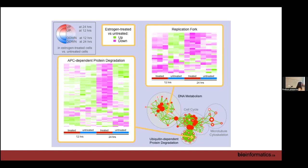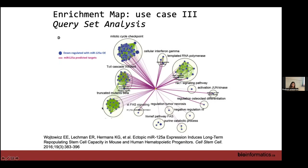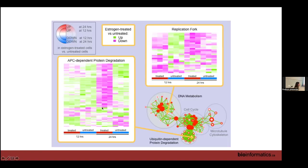You can also delve into the details of an individual pathway. You have expression data and ranks which you can load into Cytoscape when you create your enrichment map, so when you click on an individual node you can see the differential expression of individual genes within that pathway. Here you can see pathways where there's no expression at 12 hours but there is expression at 24 hours — a clear difference in expression patterns. Enrichment Map offers not only global pathway summarization but also a tool to explore individual pathway details.